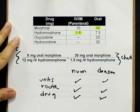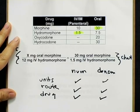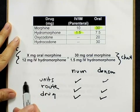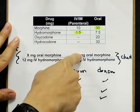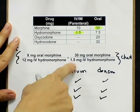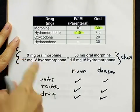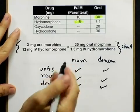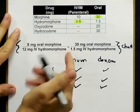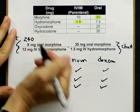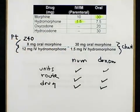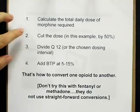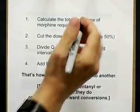Now that everything matches, we do our multiplication and division. These are solved by multiplying across by the two known quantities: 12 times 30 equals 360, then divided by 1.5 to solve for X. So the milligrams of morphine is 360 divided by 1.5, which equals 240 milligrams of morphine. We calculated the total daily dose of morphine required: 240 milligrams.